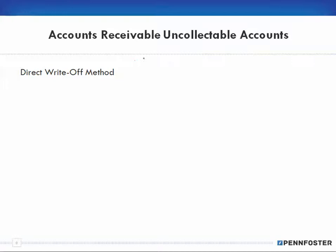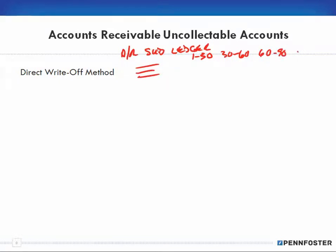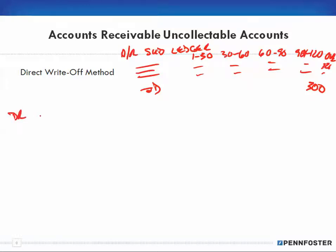At the end of the accounting period, you look at the accounts receivable subsidiary ledger. You have the different customer names and columns for 1-to-30 days, 30-to-60, 60-to-90, 90-to-120, and over 120 days. You can see what each customer owes in those time periods. If a customer like John Doe in the over-120 column is not going to pay you the $300, you have to write it off. When you make a sale on account, you debit accounts receivable for John Doe for $300 and credit your revenue account for $300.